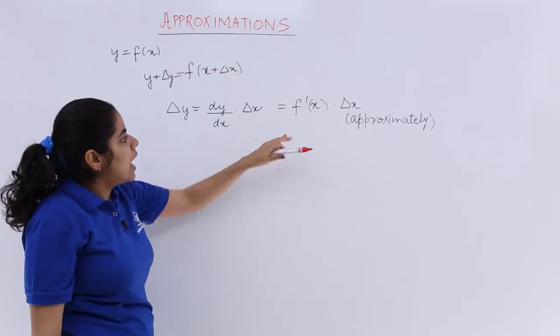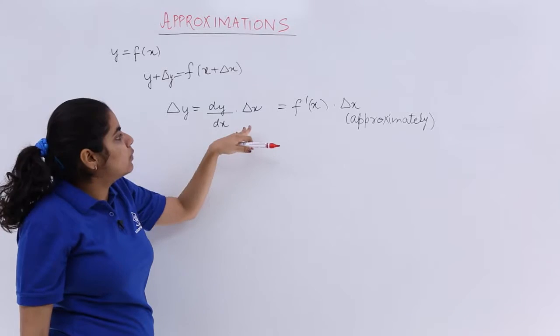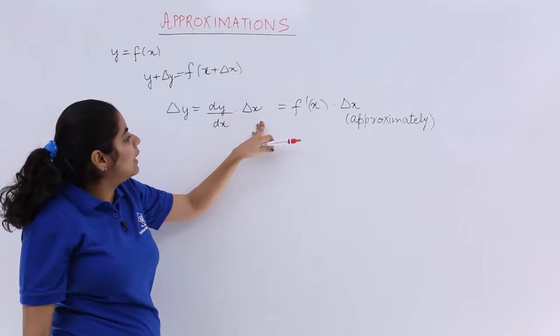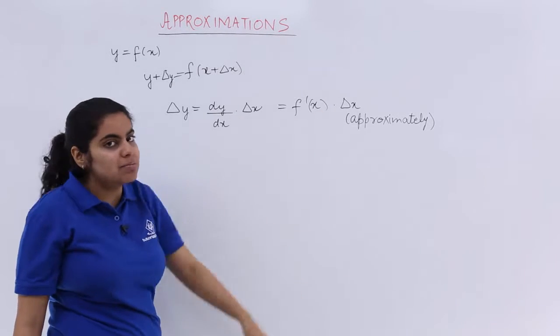Or del y is what? I say that del y is equal to dy upon dx multiplied by del x which is equal to f dash x multiplied by del x.